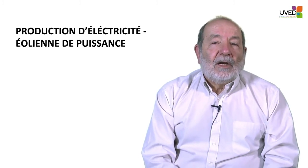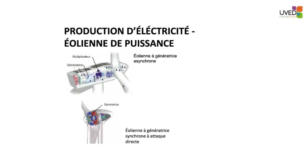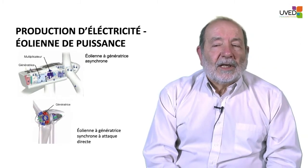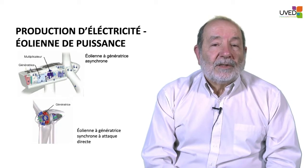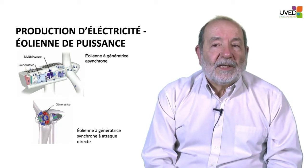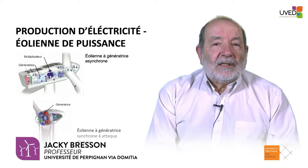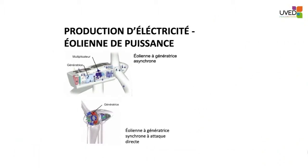To produce electrical power, generators are needed. There are two categories. Some windmills use asynchronous generators with a gearbox between the rotor and the generator. The gearbox is a mechanical system with gearing that has a very low yield, taking power away from the final output, and it very often breaks down and causes problems.